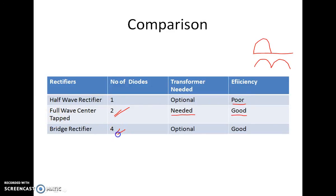In case of bridge, the number of diodes have increased to four, but the transformer requirement has been reduced in this case, giving a full wave efficiency, which is good.